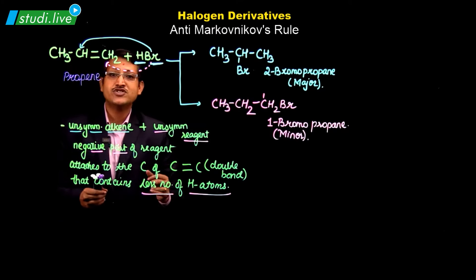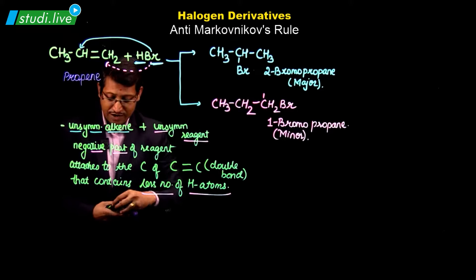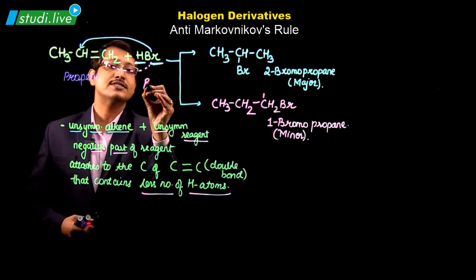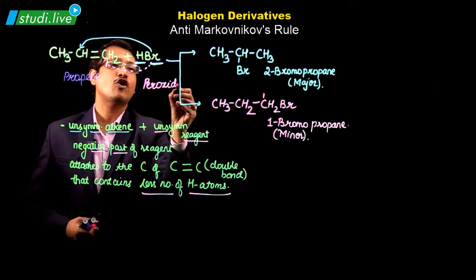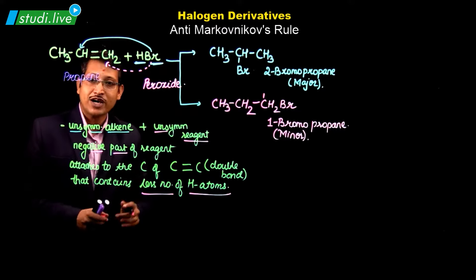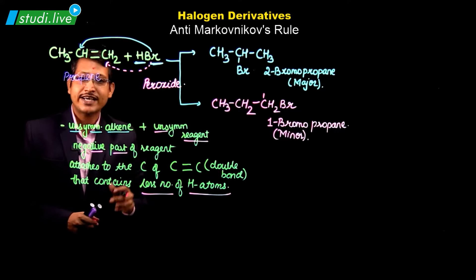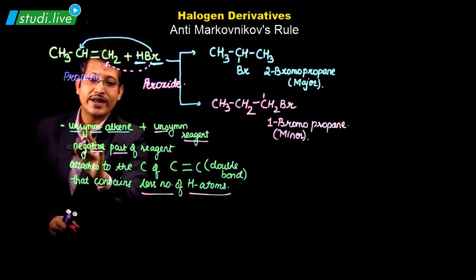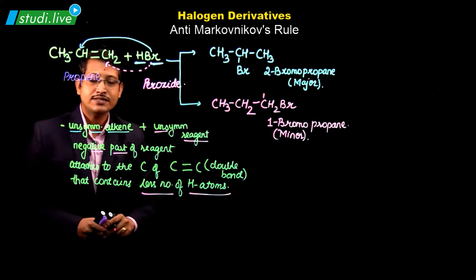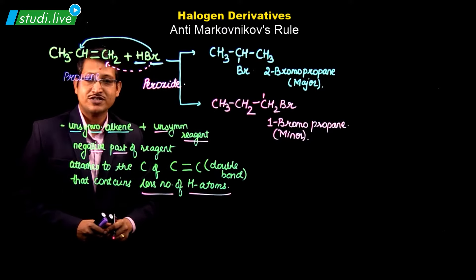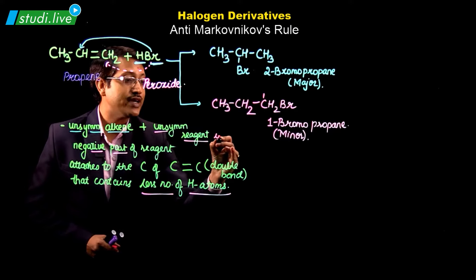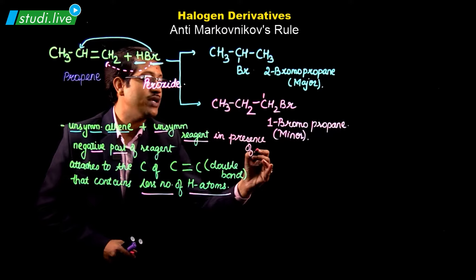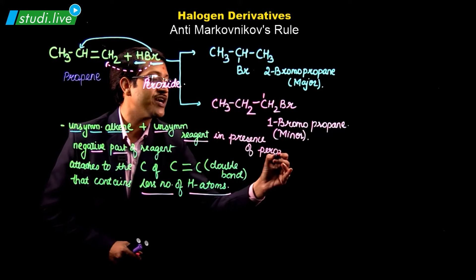But now, the major and minor products are going to change — and why? The reason is very clear: the reaction takes place in presence of something called peroxide. So for anti-Markovnikov's rule, the reaction takes place in presence of peroxide.